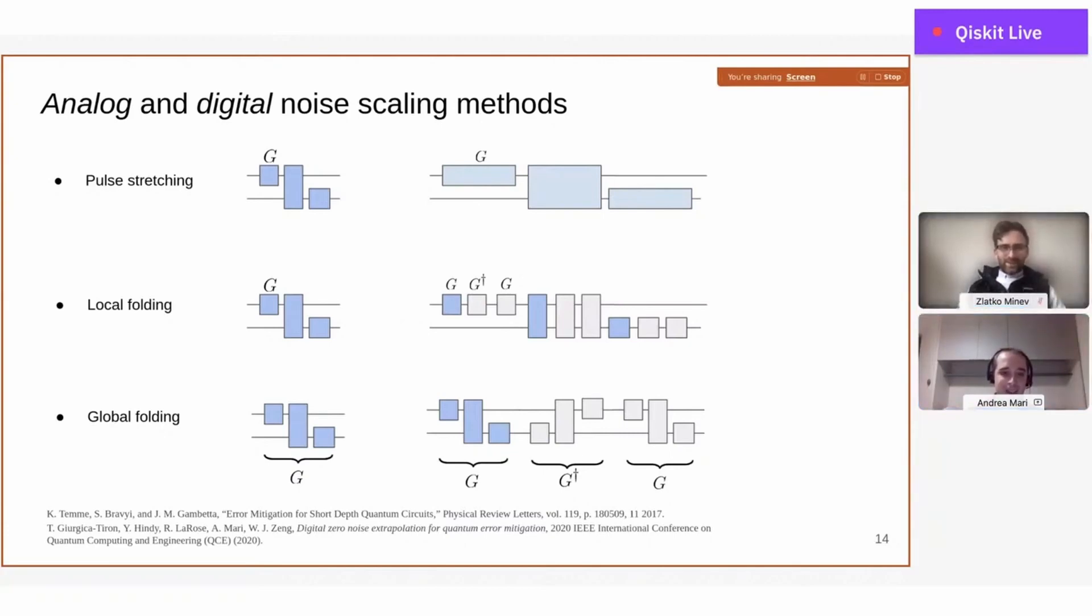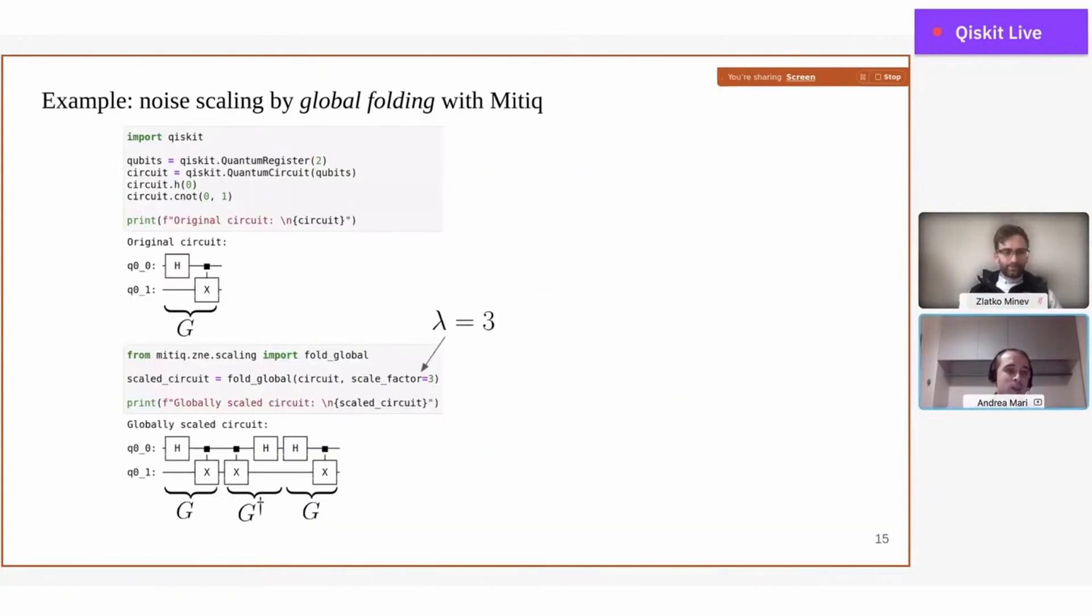Just to give a practical example, if you want to do this with Qiskit, assume that you define a very simple circuit—Hadamard followed by a CNOT. You can simply call these functions, which are called global folding, for example. You can choose the scale factor, in this case three. What you get is a new circuit equivalent to the original one but with three times more gates. In principle, these functions are defined to work also with intermediate values of lambda, not just odd integers but any arbitrary real number larger than one.